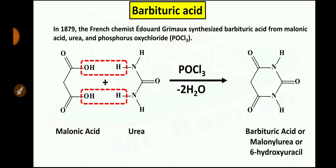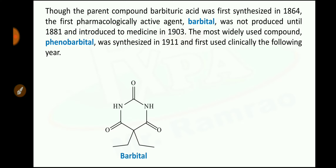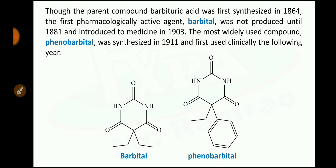Nowadays, malonic acid is replaced with the diethyl ester of malonic acid for the synthesis of different barbituric acid derivatives. Though the parent compound barbituric acid was first synthesized in 1864, the first pharmacologically active barbiturate was not produced until 1881 and was introduced to medicine in 1903. The most widely used compound, phenobarbital, was synthesized in 1911 and first used clinically in 1912.